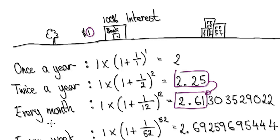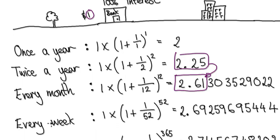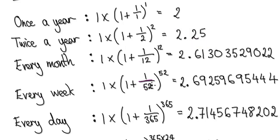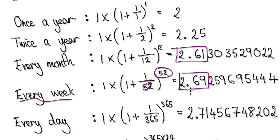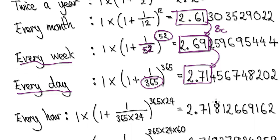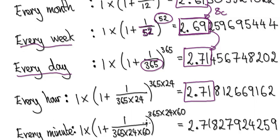If you compound it every week — 52 times a year — you get this much, which is about 8 cents more than monthly. If you compound it every day, you divide by 365 and get slightly more money. If you do it every hour, you get this much. If you compound it every minute, you get this much. You get more money, but the increases are getting smaller and smaller.